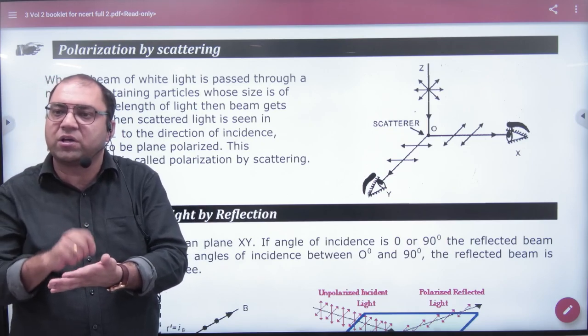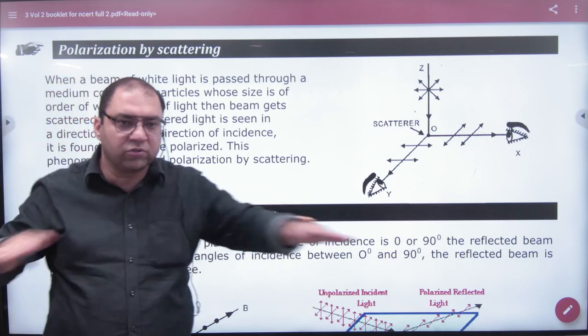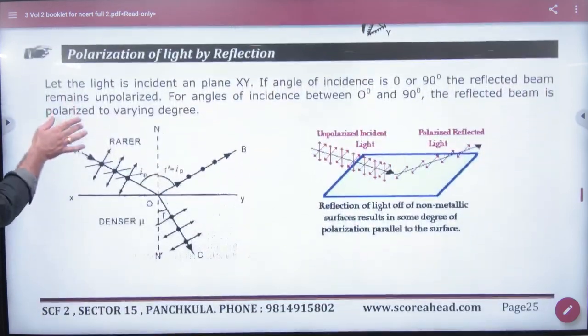What is the second method of polarization? Scattering of light. If you can see the light from 90 degrees, then you will have polarized light. This is the second method. Okay, let's discuss the third method.